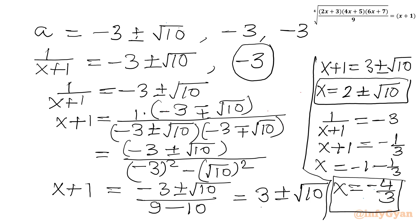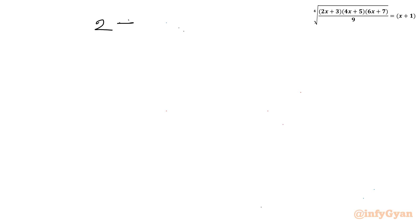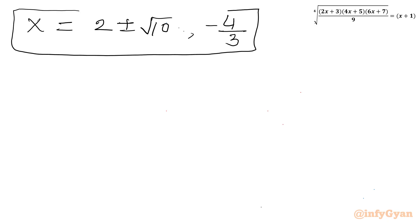So we have three candidate solutions: x = 2+√10, x = 2−√10, and x = −4/3. Now we consider the original equation to check which solutions might be extraneous.